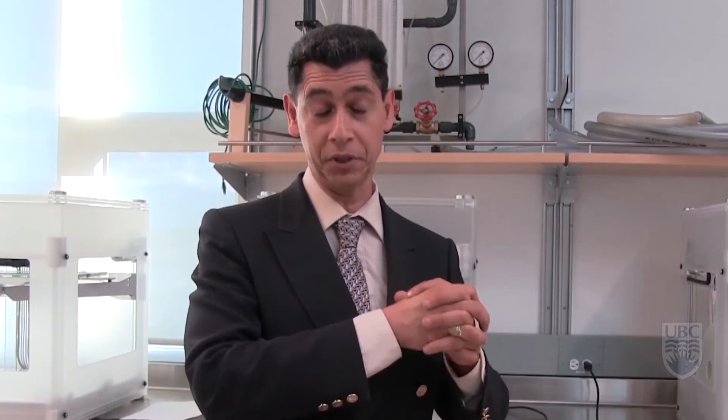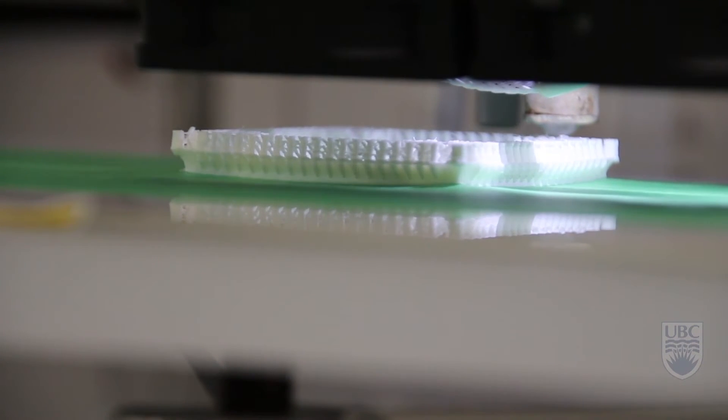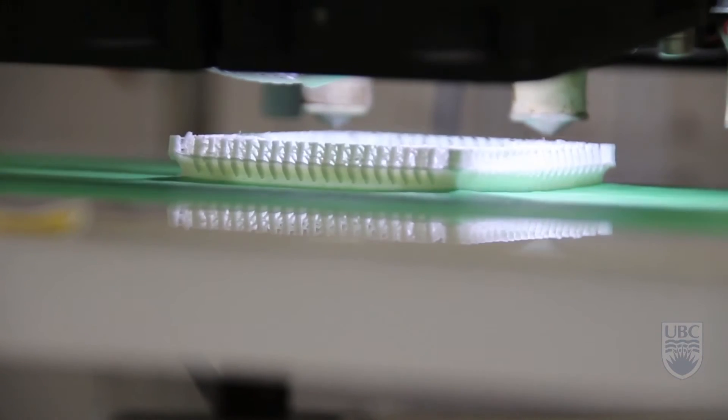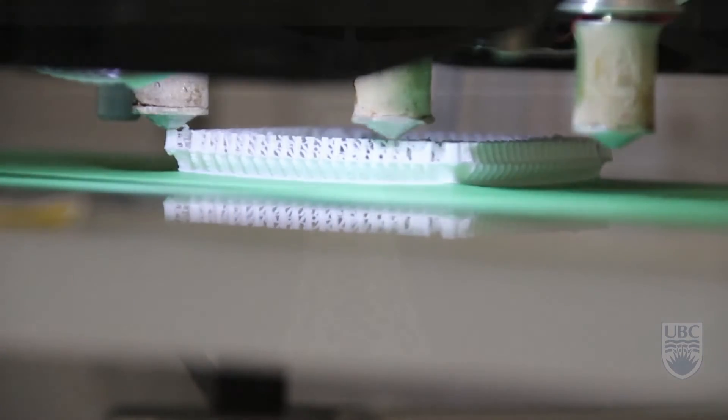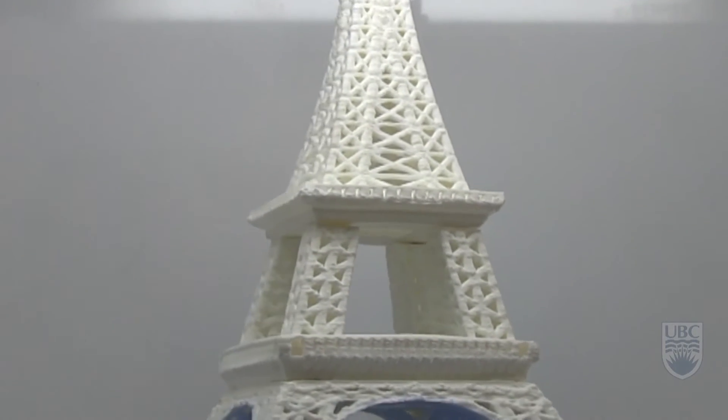There are, of course, some limitations for 3D printing, especially in this particular technique called FDM. As I mentioned, we have a semi-solid material, mostly either PLA or ABS. It passes through a nozzle and it travels X and Y and Z. So I have printed this Eiffel Tower. And of course, I couldn't print it in one piece.